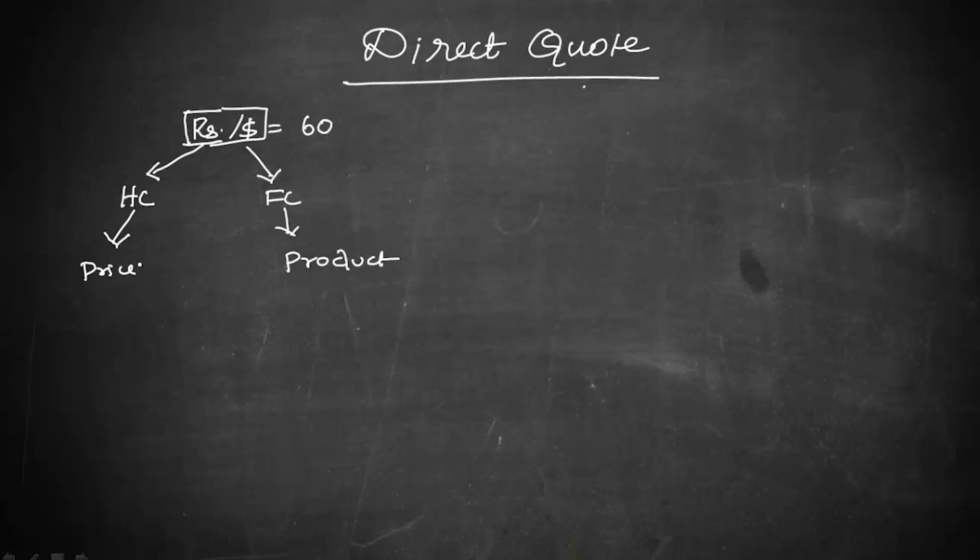This method of quoting is called a direct quote. That is, you put the price first and the product next. For example, you go to a shop and you ask for the price of 10 books.